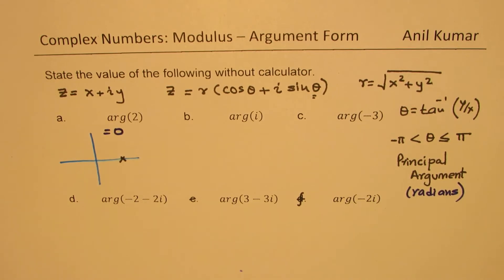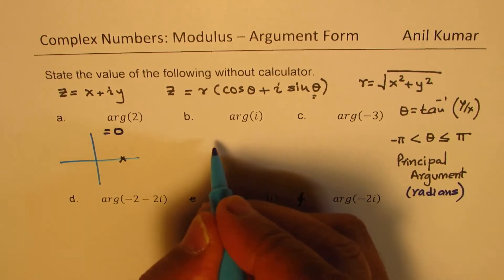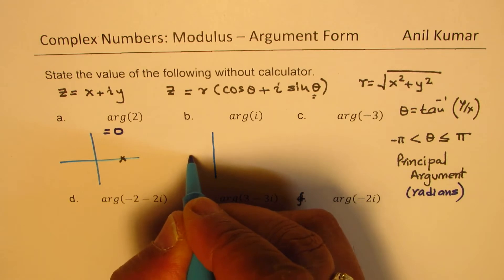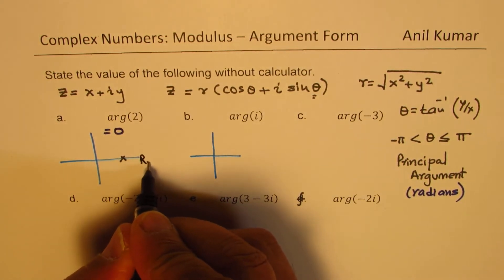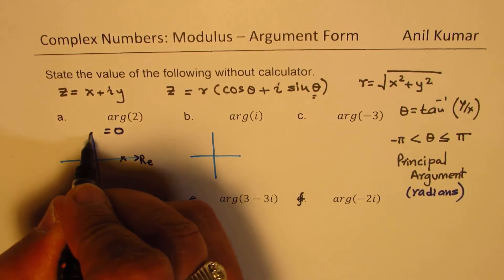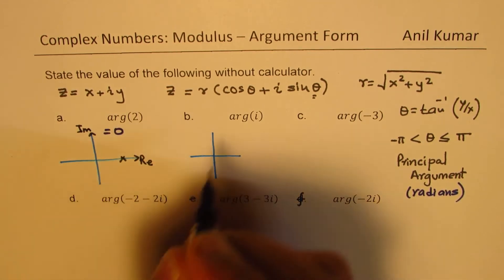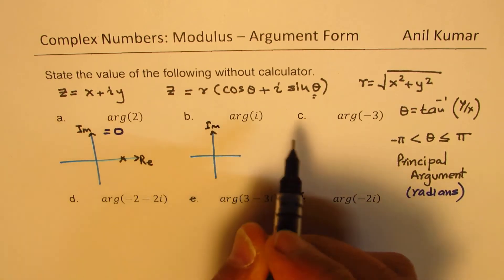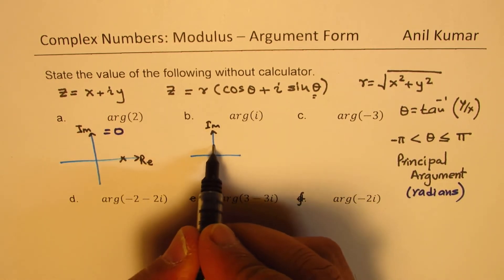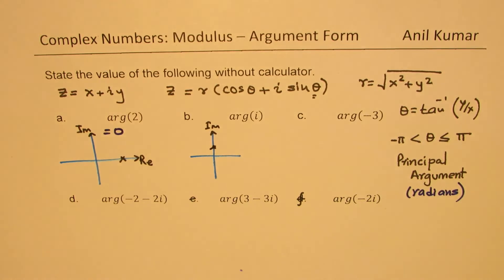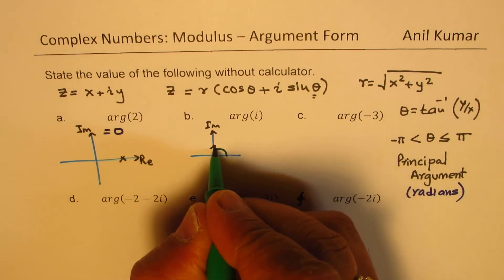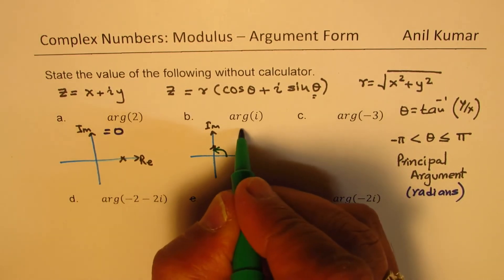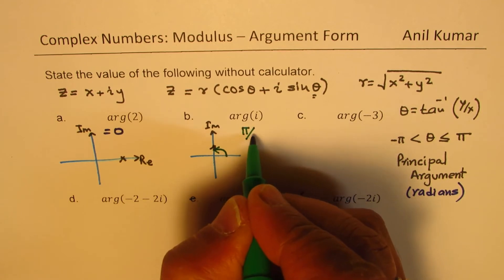The second one is argument i. Now when I say i, that means the location is, well, this is your real axis, correct? That one is your imaginary axis. So when we say i, we are here. So at this point, all the angles are being measured from positive x axis. So that is positive pi by 2. So this is equal to pi by 2.